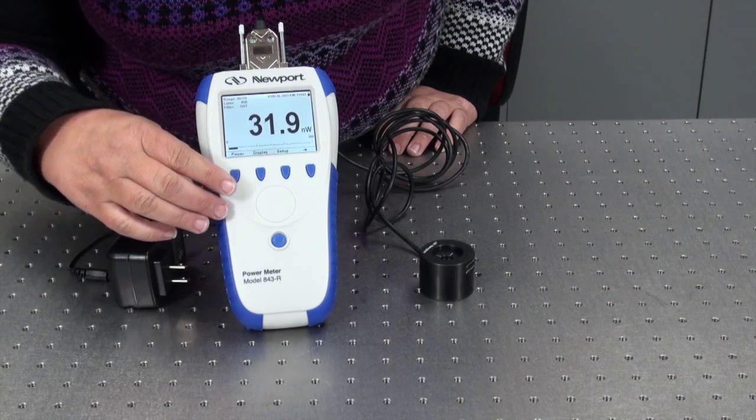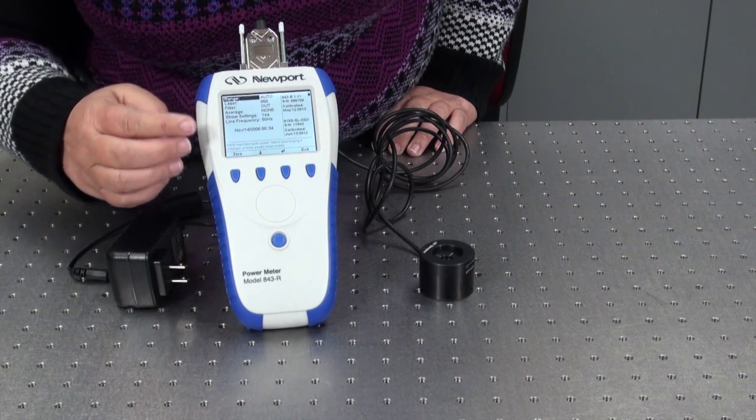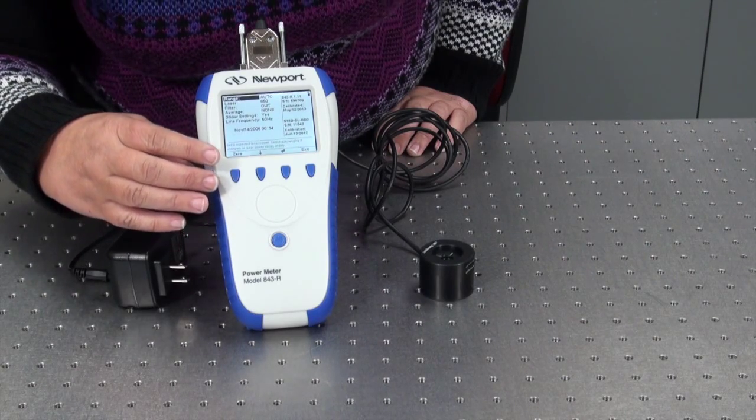To get to the setup screen from the measurement display screen, click on the soft key button below setup. Here you will also see a list of menus.